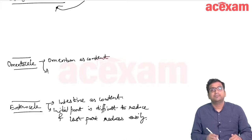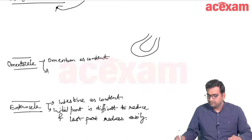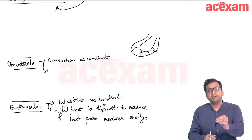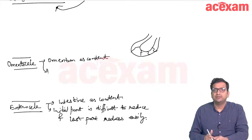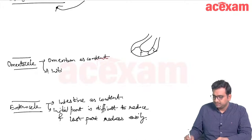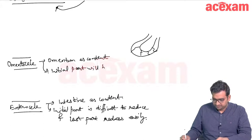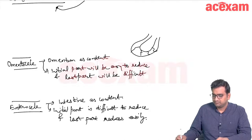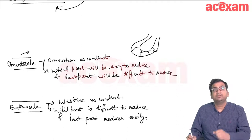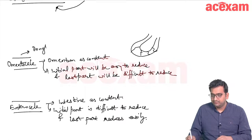In omentocele, omentum tends to form adhesions with the sac, so the initial part reduces easily but the last portion is adherent and difficult to reduce. Omentocele gives a doughy feeling to the content on palpation.